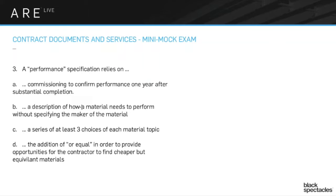A performance spec is where you're not giving the name of the material — instead you're specifying what you need to have happen from that material. For carpet, you might say it has to have a flame spread of such-and-such, an acoustic NRC rating of such-and-such, and a durability rating from whatever the relevant rating body is. You're giving the performance you need from that carpet, door handle, or drywall system, and then the contractor's job is to find an appropriate material that meets that performance.